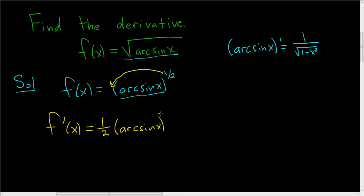And then 1 half minus 1 is negative 1 half, times the derivative of the inside, so 1 over the square root of 1 minus x squared.